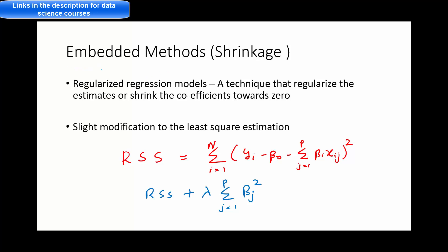Now that we have seen the different types of selection methods, let's go to the last one which is the embedded method, also known as the shrinkage method. We also call this a regularization regression model. I have made one video on regularization — if you want to learn more about it, it's in the description section.